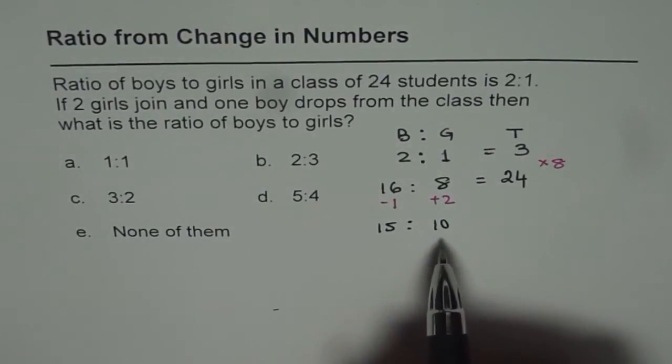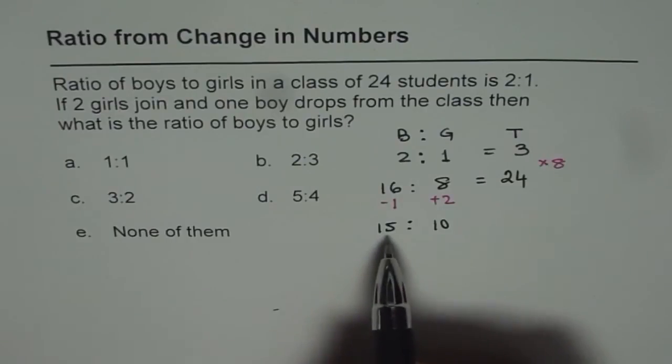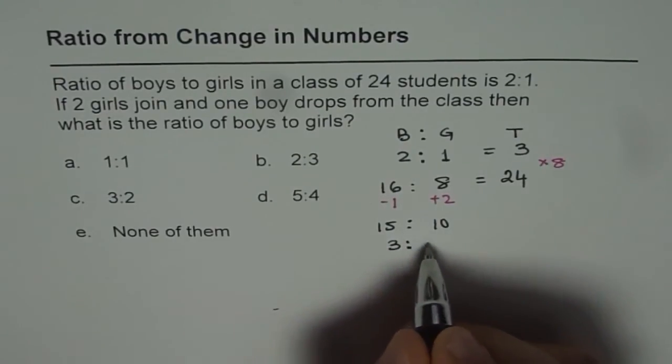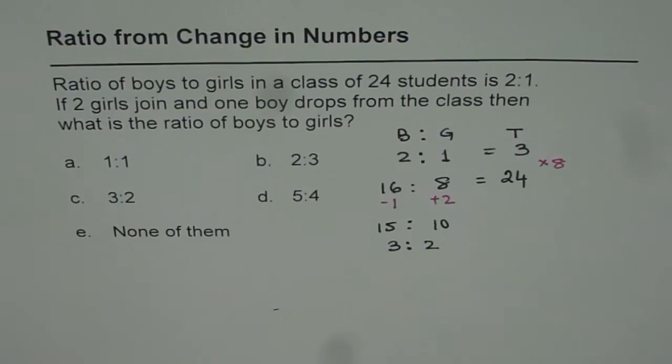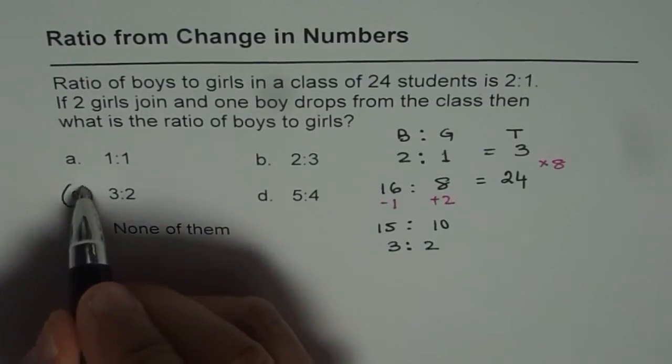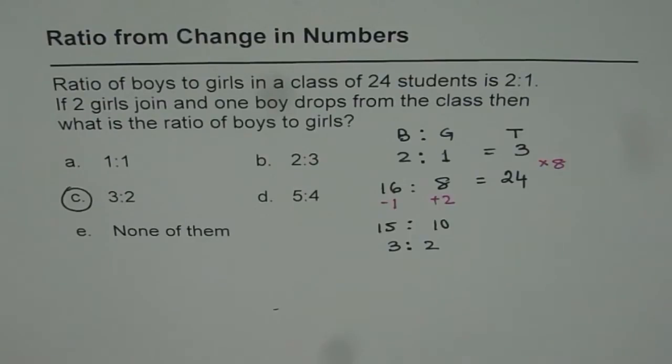Now in that case, what is the ratio? Ratio as 15 is to 10 or we can divide by 5 and so we get 3 is to 2. So 3 is to 2 is the right answer. Option C is right for us. So that is the correct choice.